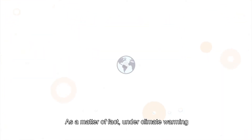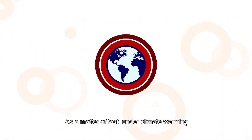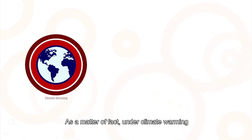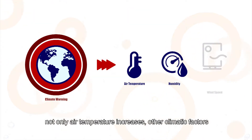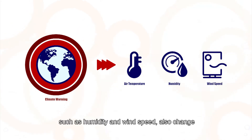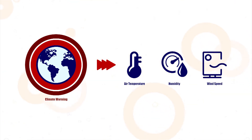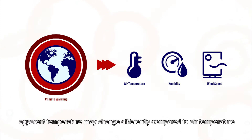As a matter of fact, under climate warming, not only air temperature increases — other climatic factors such as humidity and wind speed also change. Therefore, apparent temperature may change differently compared to air temperature.